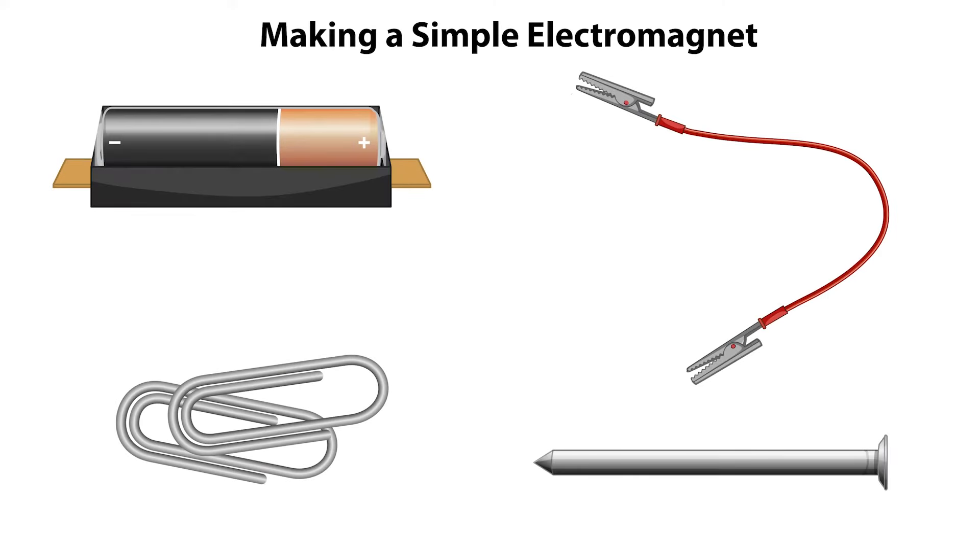Here we have an electrical wire with alligator clips, a battery, and a metal nail. How can we assemble these components to make an electromagnet that can attract some paper clips?